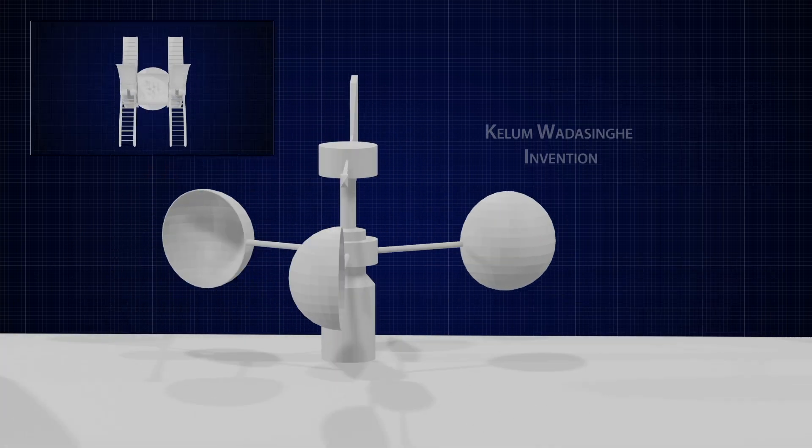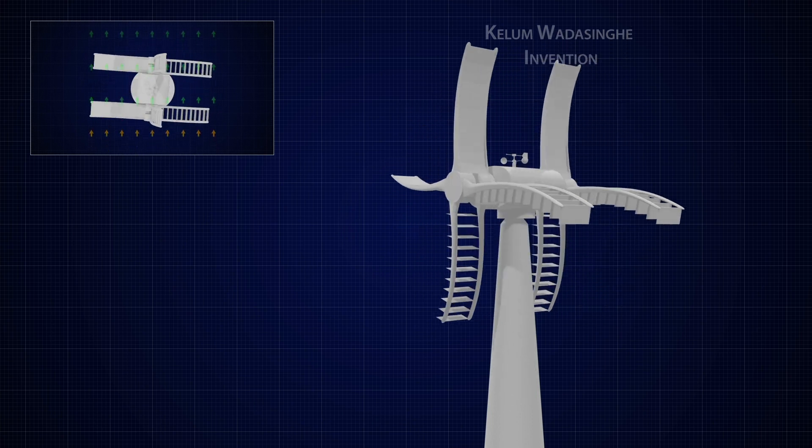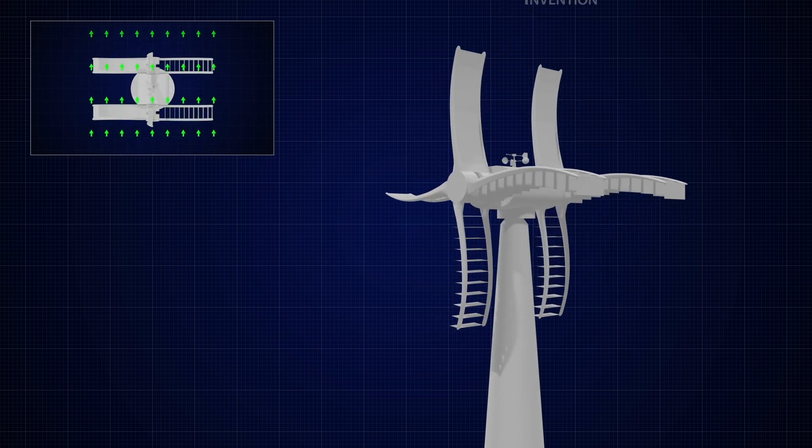When the wind flow exceeds the threshold value, the anemometer will give a signal to the turbine to face a safe direction.